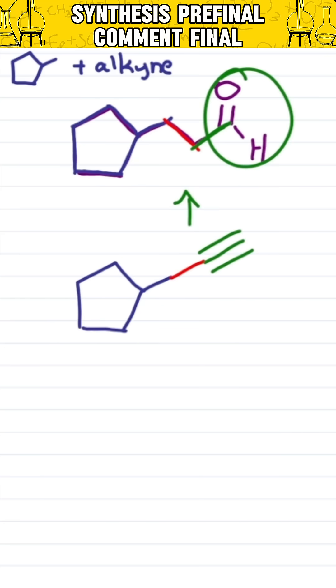And how did the alkyne get there? Through an SN2 reaction, which means I have to break this bond and give this carbon a leaving group, which means one step back I had this thing with, how about a bromine?